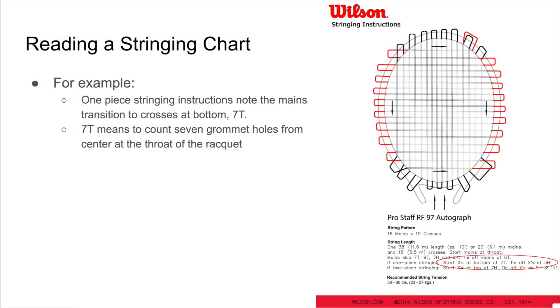Here's a quick picture of counting of the throat grommets. You can see that they are tied off at what would be 6T, and you can see that the 7th grommet is a cross string, and the 8th grommet would then, of course, be another main. So keep that in mind. You do not want to miscount the grommet holes. So let's go to an example. In this stringing chart, for one-piece stringing, the instructions call for the mains to transition to the crosses at the bottom, listed at 7T. 7T means to count 7 grommet holes from the center at the throat of the racket. The instructions go on to say that the crosses will be tied off at 5H, so that will be 5 grommet holes from the center at the head of the racket.